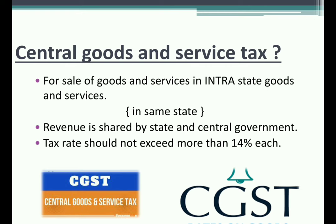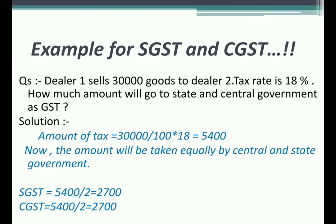Let's take an example for both CGST and SGST. For example, one dealer sells goods worth ₹30,000 to another dealer in the same state. The tax rate is 18%. They are asking how much the state government and the central government will each get as GST.